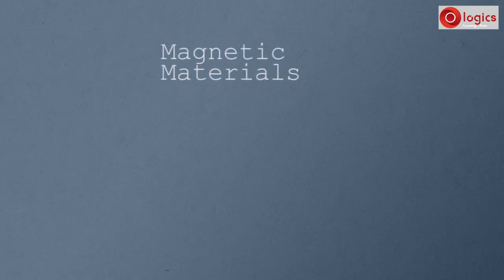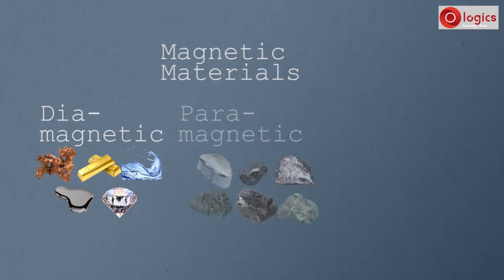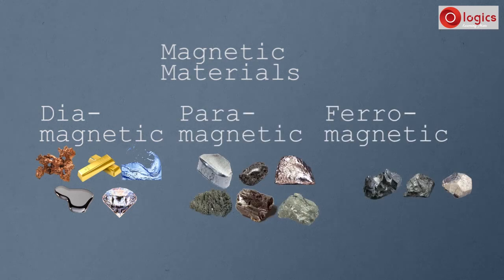We learned what are magnetic materials. These magnetic materials are further divided into three types: diamagnetic materials, paramagnetic materials, and ferromagnetic materials.